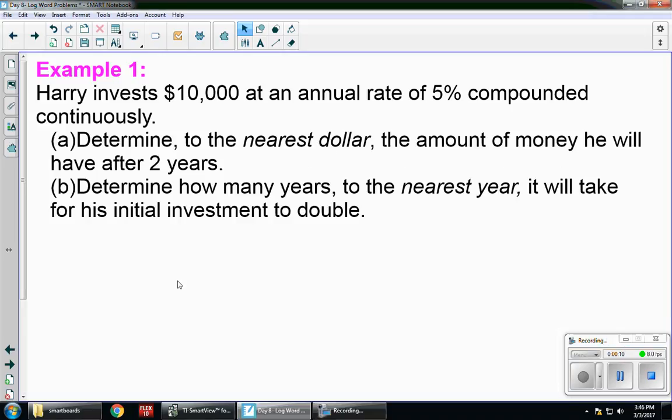Example 1: Harry invests $10,000 at an annual rate of 5% compounded continuously. And that's important because that tells us what formula to use. If you remember, compounded continuously is A = Pe^(rt). So part A says, determine to the nearest dollar the amount of money he will have after two years.